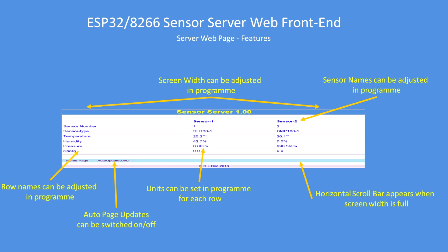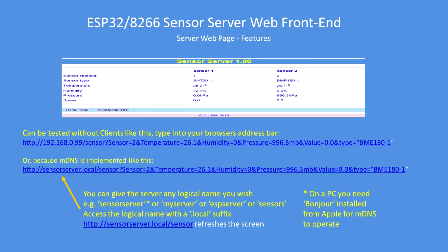There's an option to switch the auto page update on or off. Every 30 seconds it refreshes to give you the current readings, and the horizontal scrollbar appears when sensor numbers increase beyond the current page width. To test the server you don't need clients — you can test the client with that HTML address line. I've put it in the source code too, so if you click on the line it will display the values and assume a sensor transmitted data to the server.